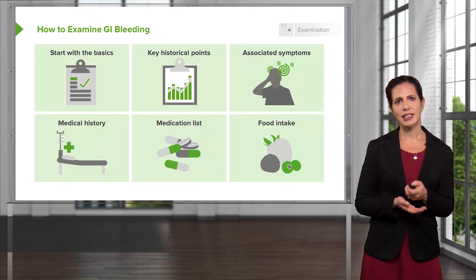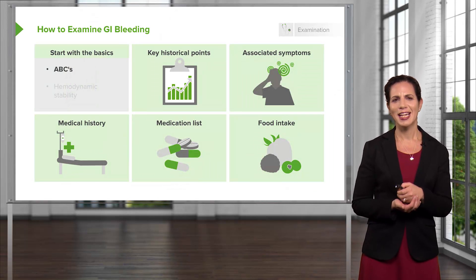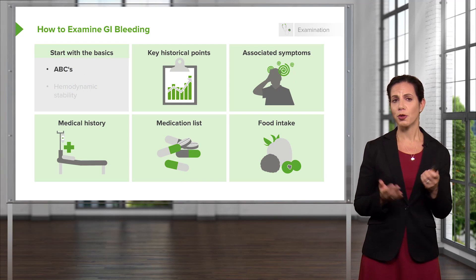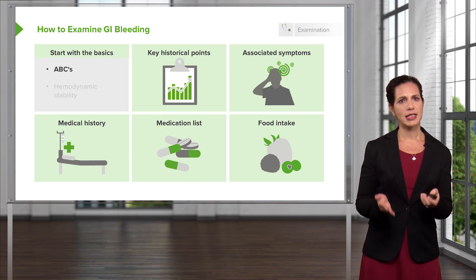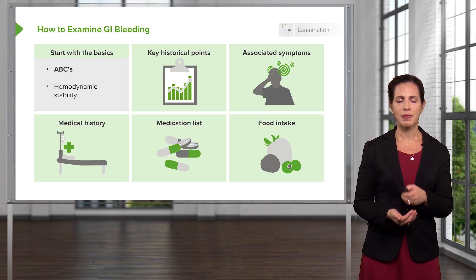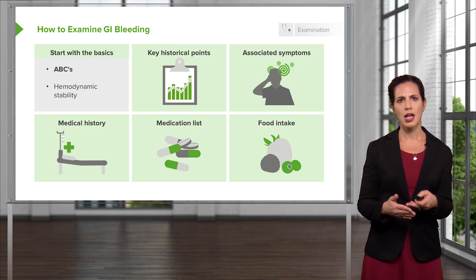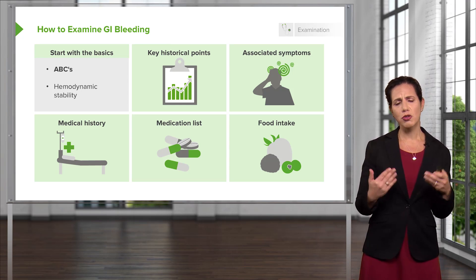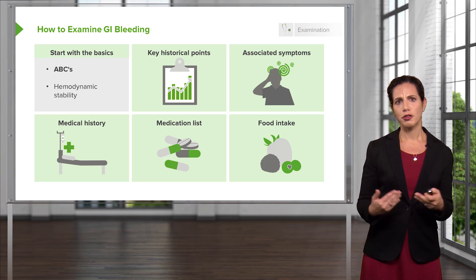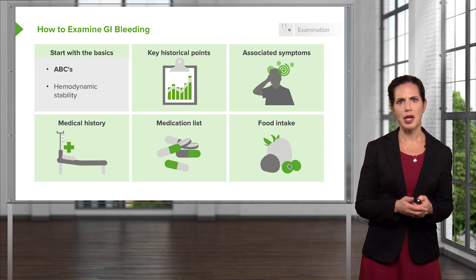Now let's think about signs and symptoms. We want to start with the basics — going back to those ABCs. You also want to think about hemodynamic stability: is the patient hypotensive, is their blood pressure low, are they tachycardic? What is their skin like — are they cool and clammy or warm and well perfused? For patients who are cool and clammy, you want to start moving things along more urgently.